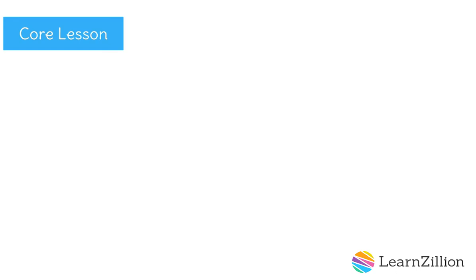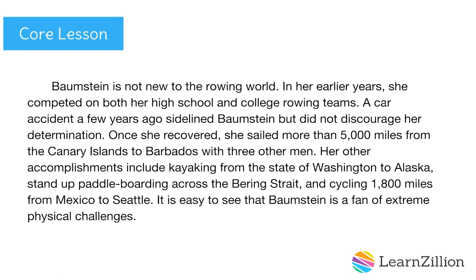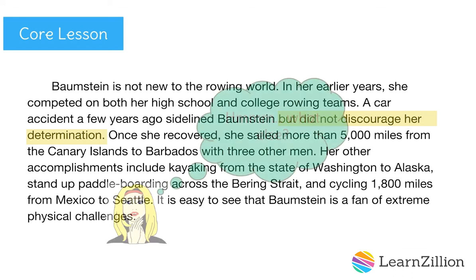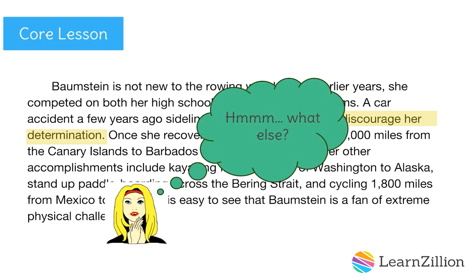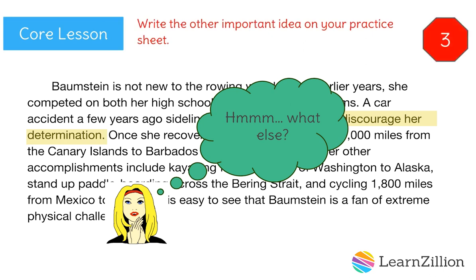Here is the first body paragraph from the text. As I look at the details in this paragraph, I notice two things. First, Baumstein is determined because she fought her way back from the car accident. What else do you know about Baumstein from reading this paragraph? Write your idea on your practice sheet. Pause the video while you write. Press play when you are done.